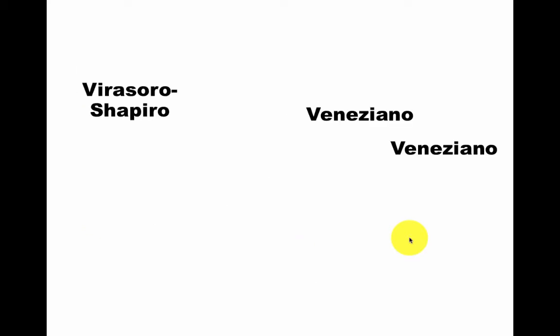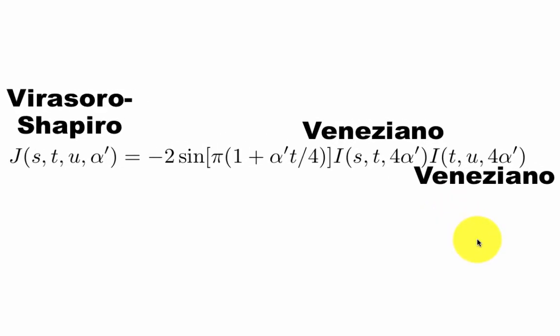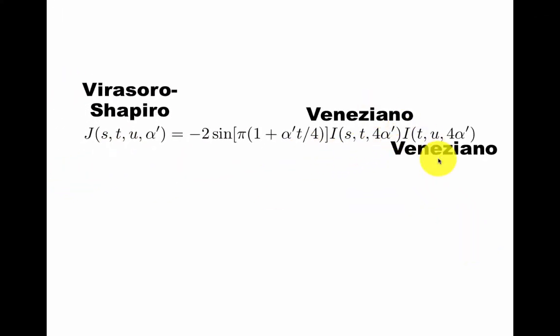Now if you just look at the answers you get here, the Virasoro-Shapiro integrand has a function called j, and there's a similar one in Veneziano, and you find this interesting relation. So if we were sloppy, we could just say Virasoro-Shapiro is roughly the square of Veneziano, but you see it's not quite true.